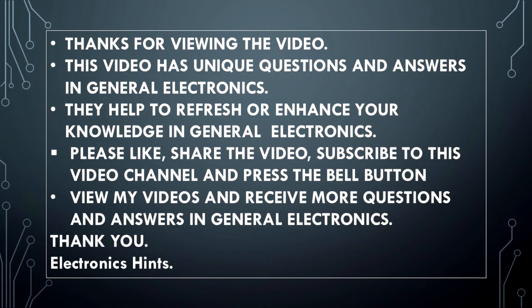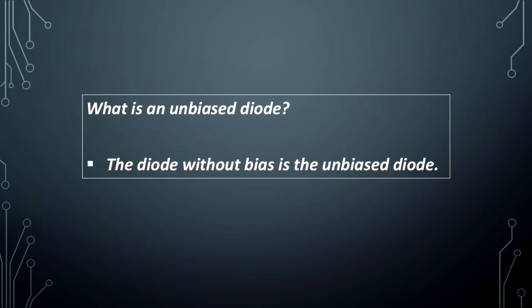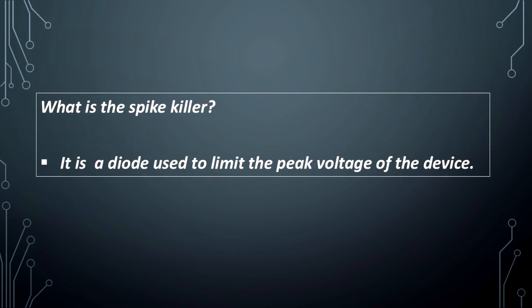What is an unbiased diode? The diode without bias is the unbiased diode. What is a spike killer? It is a diode used to limit the peak voltage of a device.